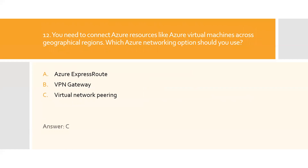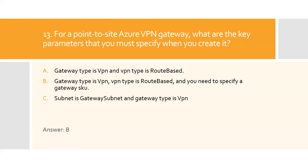Question twelve: You need to connect Azure resources like Azure virtual machines across geographical regions. Which Azure networking option should you choose? A) Azure ExpressRoute, B) VPN Gateway, C) Virtual network peering. Use virtual network peering to connect virtual networks to each other so resources in either virtual network can communicate with each other. The virtual networks you connect can be in different Azure regions. Option C is the right answer.